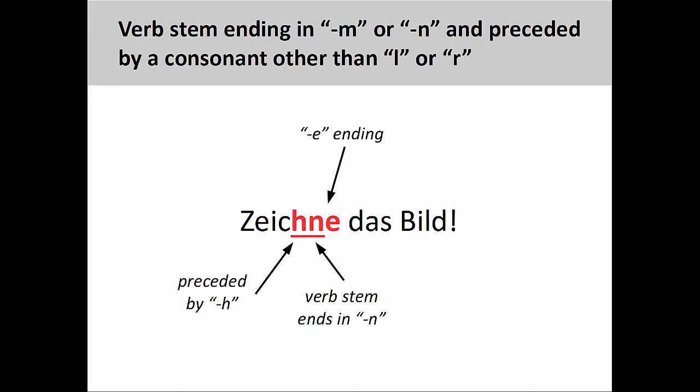Finally, if the verb stem ends in -m or -n and is preceded by a consonant other than -l or -r, then we also need to add an -e to the imperative form. Since the verb stem in zeichnen, meaning to draw, ends in -n and is preceded by an -h, we must add an -e to the imperative form: zeichne das Bild — draw the picture.